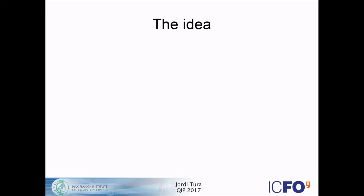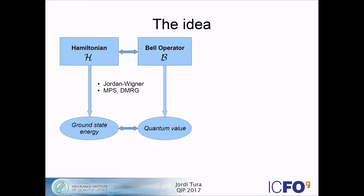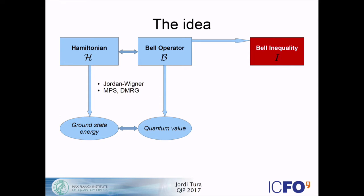Now I present the idea of how to relate this to many-body systems — this is maybe the most important slide. We start with a Hamiltonian H, and what I require is that we know how to compute the ground state energy, which can be done with methods like the Jordan-Wigner transformation, matrix product states, the MRG, and so on. I will then identify this Hamiltonian with a Bell operator that corresponds to a Bell inequality when you perform quantum measurements on it. The quantum value will correspond to the ground state energy — the optimal value measurable with that Bell operator. From the Bell operator, I extract a Bell inequality by choosing appropriate inequality coefficients.